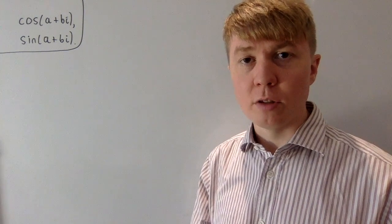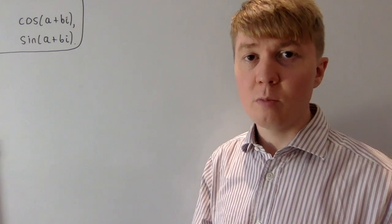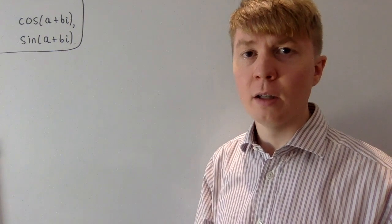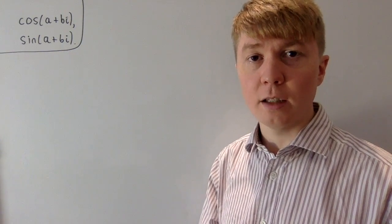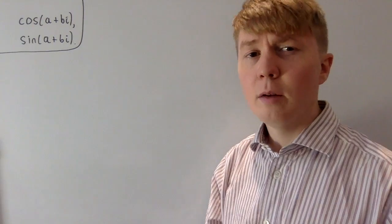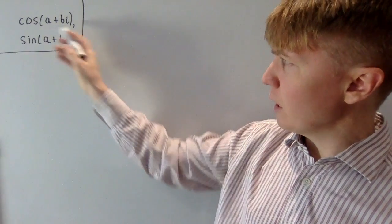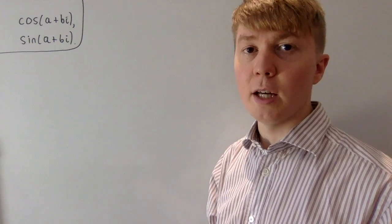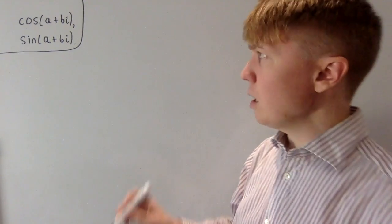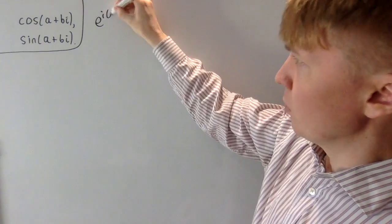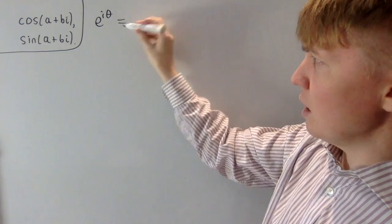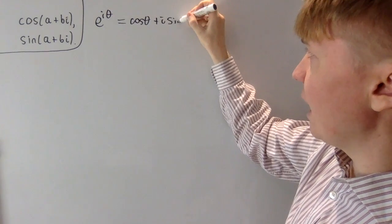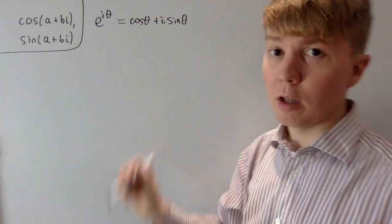We're going to look at trigonometric functions of complex numbers, finding nice expressions for these. We'll start off with cos and sine of a complex number, then later we'll also look at tan, sec, cosec, and cot. Before we get started, we need to think carefully about how we even define these functions with a complex number. We'll take for granted Euler's formula: e to the i theta equals cos theta plus i times sine theta. This is our starting point.